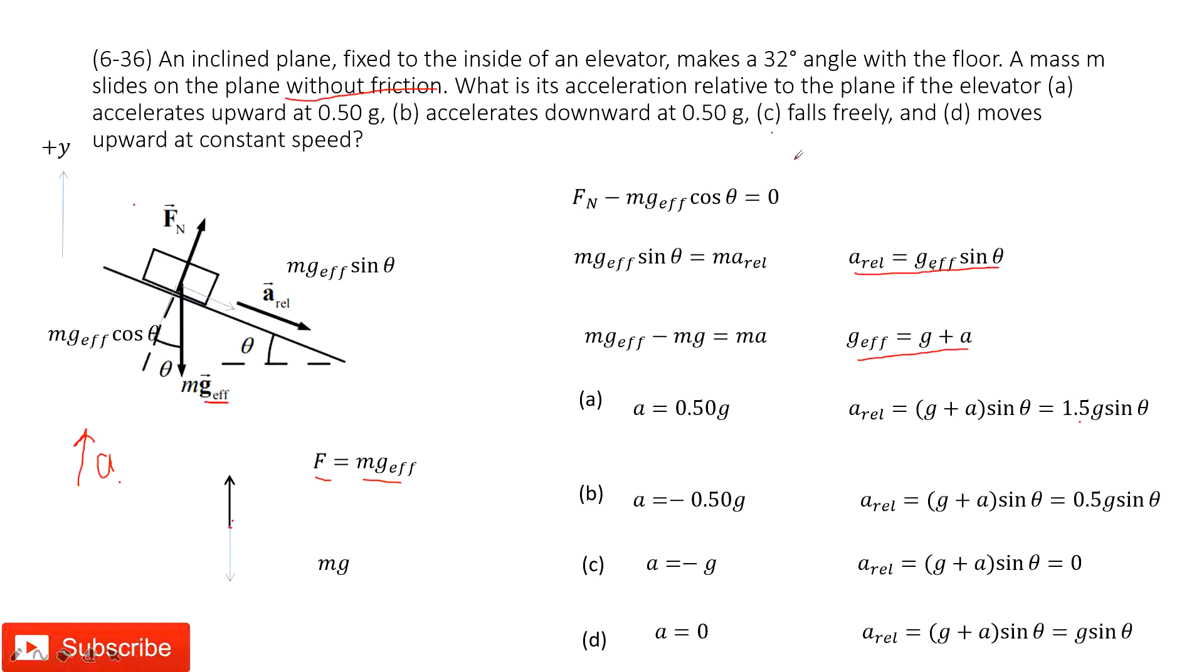The next one tells us the elevator falls freely. This is a free-fall body. Free-fall body acceleration is negative g, pointing down. So, when we put it inside, we find this acceleration, relative acceleration, equals zero.